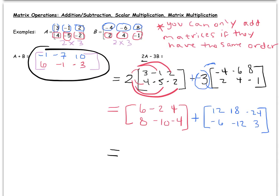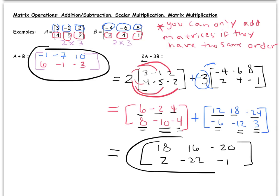And then last, we just add corresponding entries. So I get 18. 6 plus 12 is 18. Negative 2 plus 18 is 16. And a 4 and a negative 24 is a negative 20. And then 8 and a negative 6 is a 2. A negative 10 and a negative 12 is a negative 22. And a negative 4 and a 3 is a negative 1. And so there's our final answer.